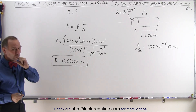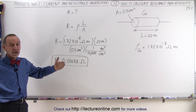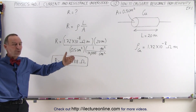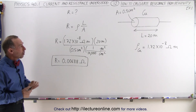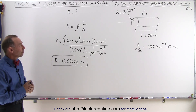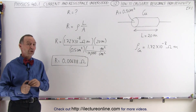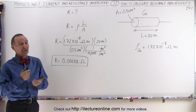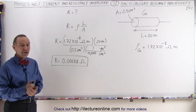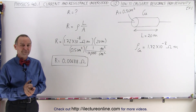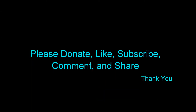That's not a lot because copper is a very good conductor, therefore it has very low resistivity. Even on a piece of copper 20 meters long with a small cross-sectional area of 0.5 centimeters squared, the resistance is still very low — and that's why copper makes such a good conductor.